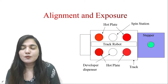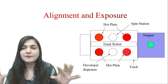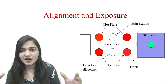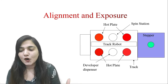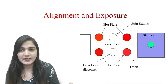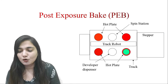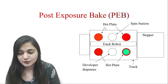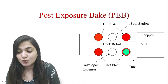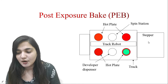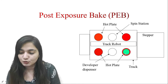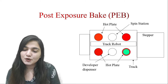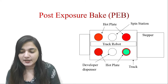Now we have the photoresist — somewhere it is hard and somewhere it is softened out because of the alignment and the exposure process. Now it goes again to the post exposure hot plate. The track robot took the wafer from the stepper and gave the wafer to the hot plate for the post exposure bake.